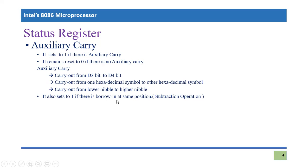In subtraction, if you are subtracting a larger nibble from a smaller nibble, you need to take a borrow from bit D4 to bit D3, and that will also be indicated in the auxiliary carry flag. So auxiliary carry is like digit carry in the PIC 18F microcontroller.